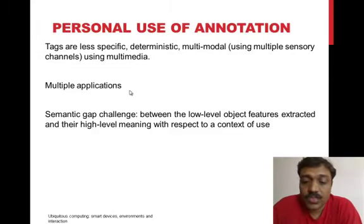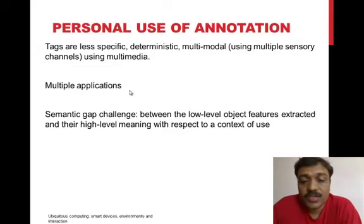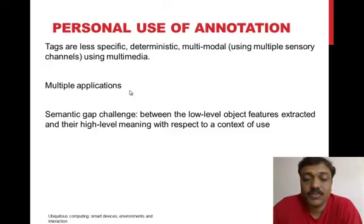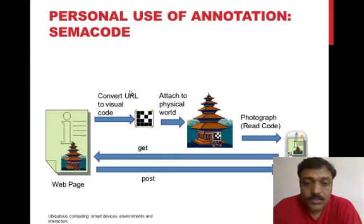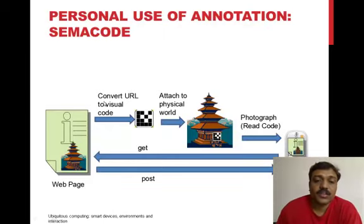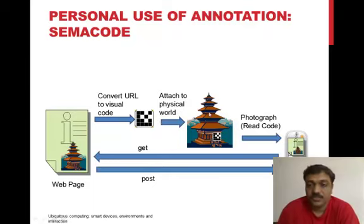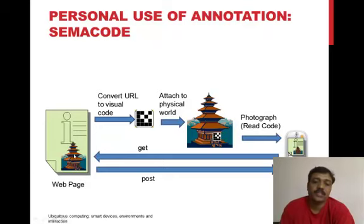Another project was SamAccord, which proposes a scheme to define labels that can be automatically processed from captured images and linked to web-based spatial information and encyclopedias. This is where a web page allows you to convert a URL to a visual code, which is then attached to a physical world object — a printed image can be attached with this code.